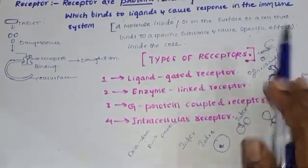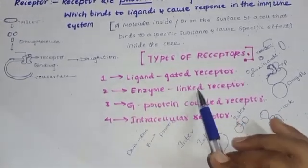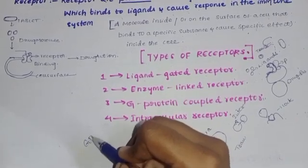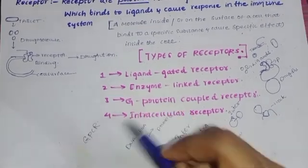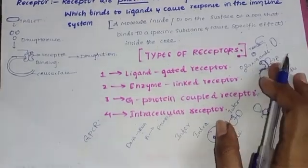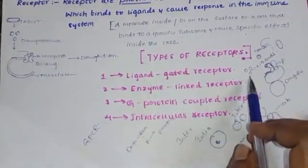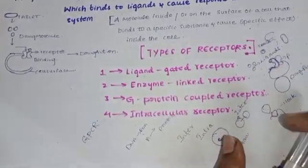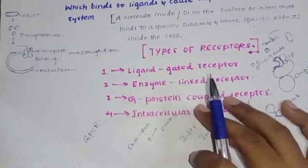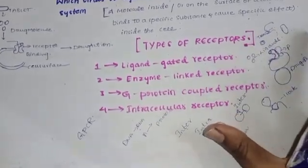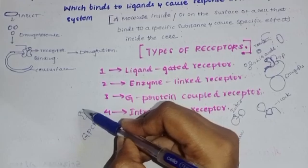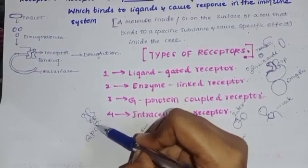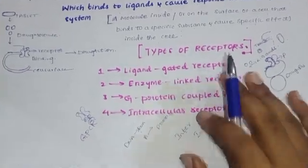The types of receptors are: ligand-gated receptors, enzyme-linked receptors, G protein-coupled receptors (GPCR), and intracellular receptors. Ligand-gated refers to very fast binding action. Enzyme-linked receptors are linked to enzyme receptor activity. G protein is a receptor structure — a complete G protein with alpha, beta, gamma subunits. Intracellular receptors are light-activated inside the cell.